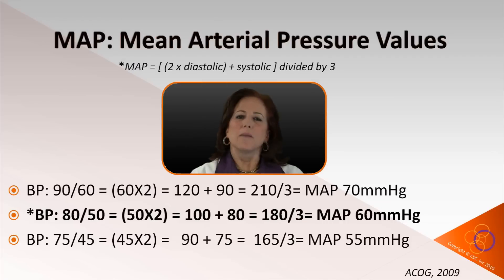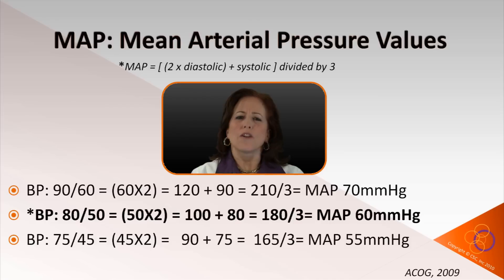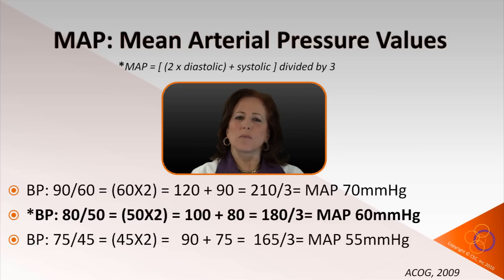A mean arterial pressure less than 60, a systolic blood pressure less than 80, or a 15% drop from normal are clinical triggers of hemorrhage. These values warrant prompt interventions for patient stability.